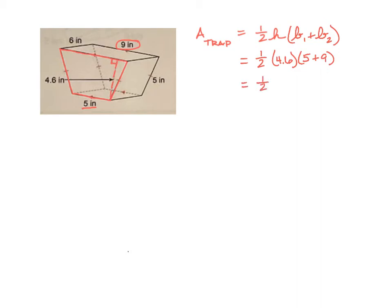To make the math a little bit simpler, we have half of 14, and then we're going to multiply that by 4.6. Half of 14 is 7, so we have 7 times 4.6. If we do the math there, we get 32.2, and then the units are going to be inches squared because this is an area. That's the area of the trapezoid.